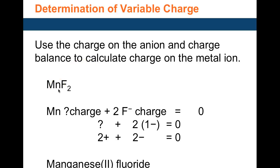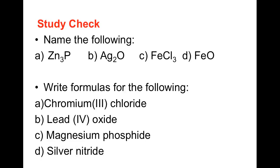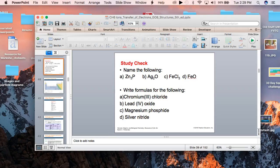Using the charge of the anion, you can find the charge on the metal ion for a group B metal. For example, each fluoride is 1−, and if there are two of them that is a total of 2−, therefore the charge on manganese must be 2+. So the compound is manganese(II) fluoride.